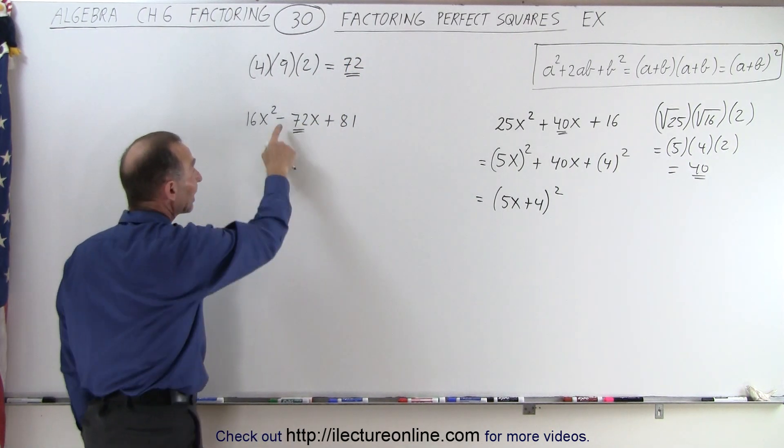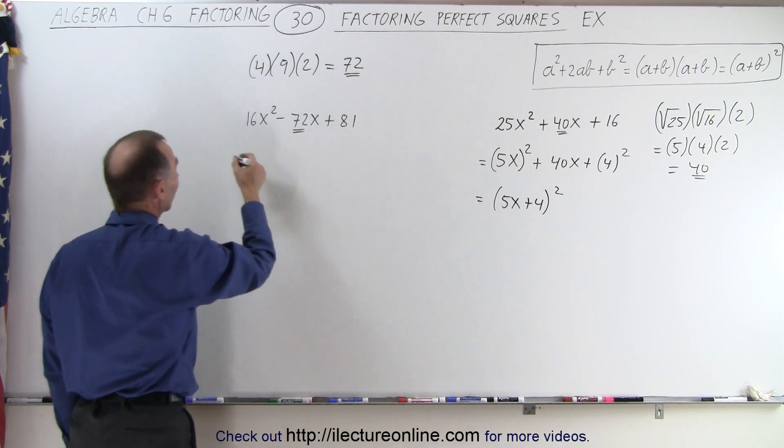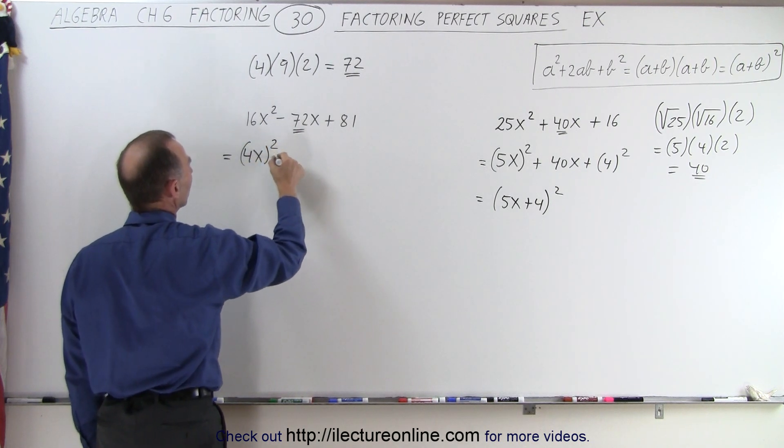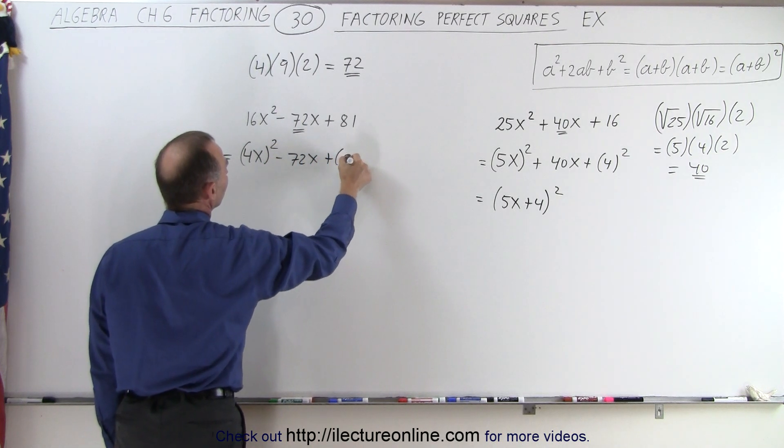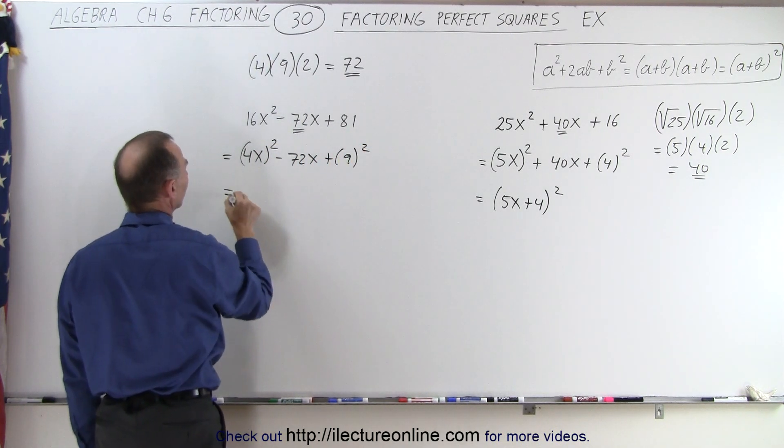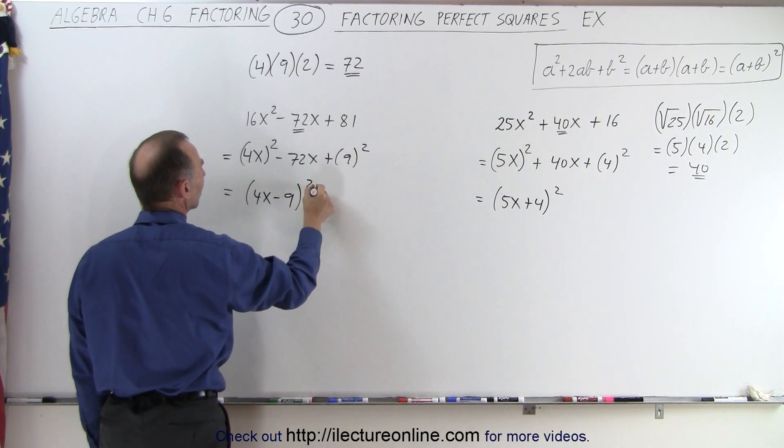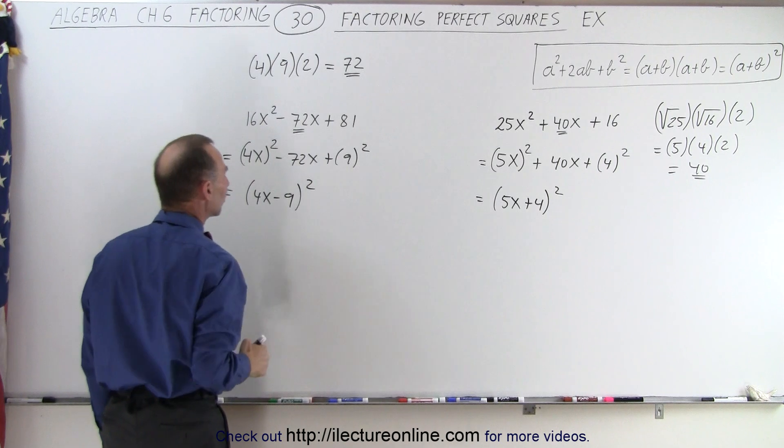However, because of the negative sign, this will then be factored as follows. This can be written as (4x) squared minus 72x plus (9) squared. So this can be factored as (4x minus 9) quantity squared, because we have a minus there.